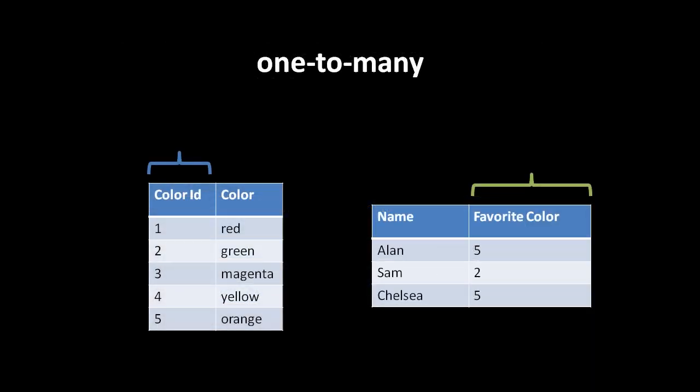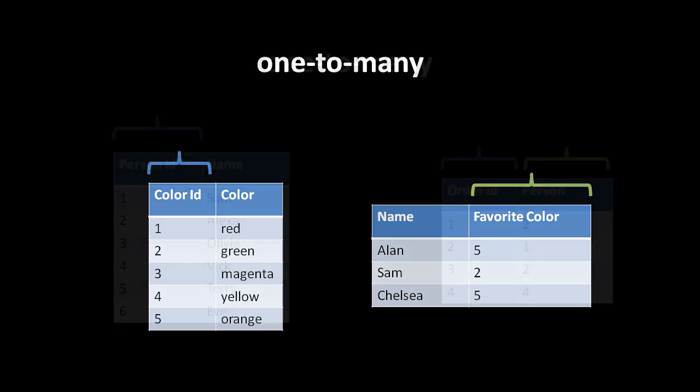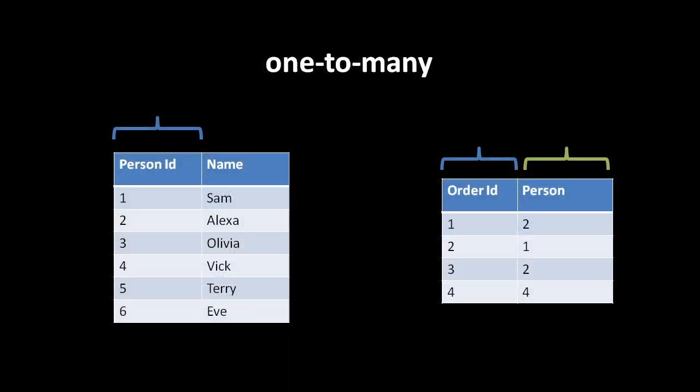A one-to-many relationship is like the one we just saw: for any one color, there are many people who might have that as their favorite color — one color, many people. This gets expressed by having two separate tables, with the people table having a foreign key pointing to the primary key of the colors table. Another example: one person might make multiple orders, so the orders table has a foreign key referencing the primary key of the person's table.